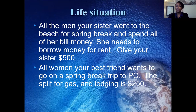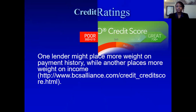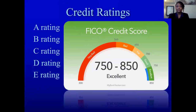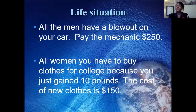Then we have a life situation: all the males are told their sister went to the beach for spring break and spent all her money and needs to borrow money for rent — deduct $500 from your account. For the females, their best friend wants to go to Panama City for spring break and they split gas and lodging — deduct $250. We then talk about credit scores, the ranges of credit scores, how you're rated, and then a life situation where all the men have a car blowout and pay the mechanic $250, and all the women buy new clothes for $150.